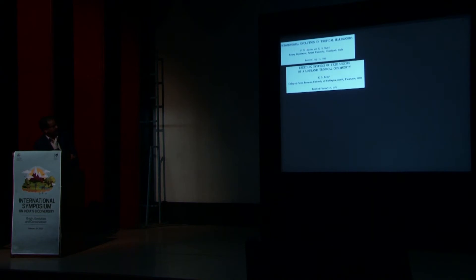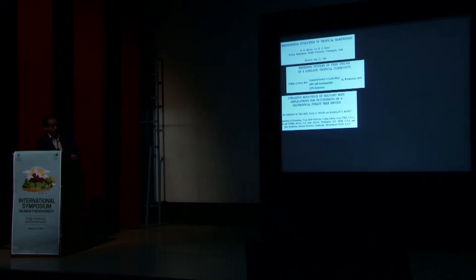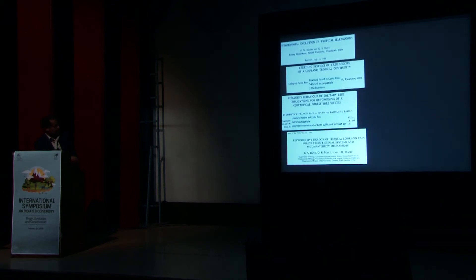So using this, he came up with several papers. The very first one is, of course, that was from India, looking at the chromosomal evolution in tropical hardwoods. So he's the first one to show that tropical trees tend to have large number of chromosomes. That means it could be most likely hybridization and polyploidization may be the reason for the diversification. And then from Costa Rica, in lowland forest trees, he showed about 54 percent trees are self-incompatible, and also 22 percent species. And another study, this is looking at the foraging behavior of solitary bees with Gordon Franke, Opla, and Bawa. So lowland forests in Costa Rica, so they are self-incompatible, and also intertree movement of bees sufficient for the fruit set.